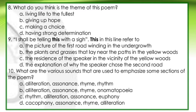Question 9: 'I shall be telling this with a sigh.' This line refers to: A. The picture of the first road winding in the undergrowth. B. The plants and grasses that lay near the paths in the yellow woods. C. The presence of the speaker in the vicinity of the yellow woods. D. The explanation of why the speaker chose the second road. Question 10: What are the various sounds used to emphasize some sections of the poem? A. Alliteration, assonance, rhyme, rhythm. B. Alliteration, assonance, rhyme, onomatopoeia. C. Rhythm, alliteration, assonance, euphony. D. Cacophony, assonance, rhyme, alliteration.